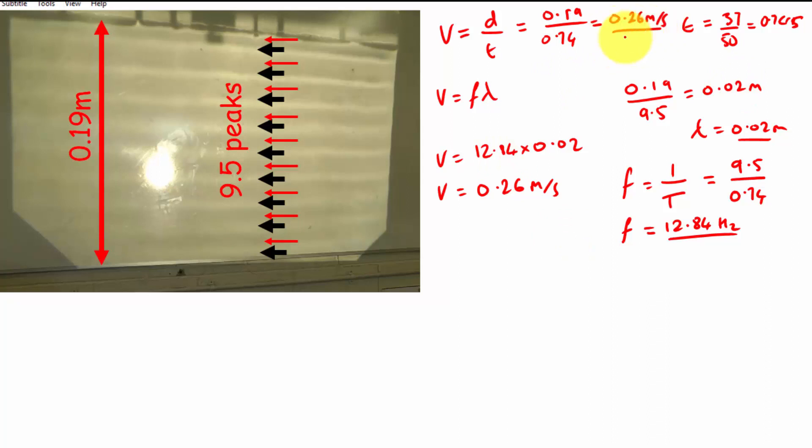So you can get the wavelength, you can get the velocity two ways, but either way using the ripple tank to get those results. Thanks for watching.